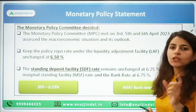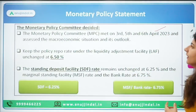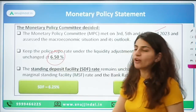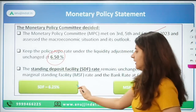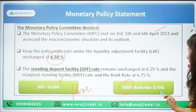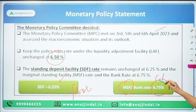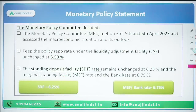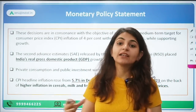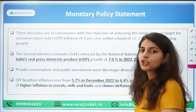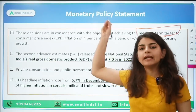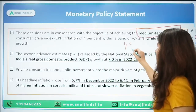The Monetary Policy Committee, which met on 3rd, 5th and 6th April, gave the Monetary Policy Statement on 6th April. The repo rate remains unchanged at 6.5%. The SDF, which is the floor rate, is 6.25%, and the MSF stands at 6.75%. The decisions are in line with the framework — the objective of RBI is to achieve a medium-term CPI target of 4 plus/minus 2%.